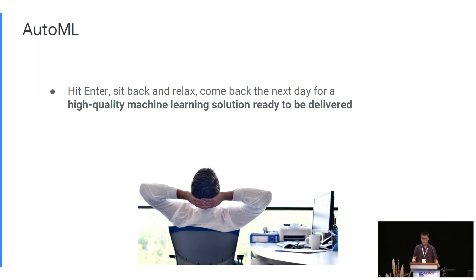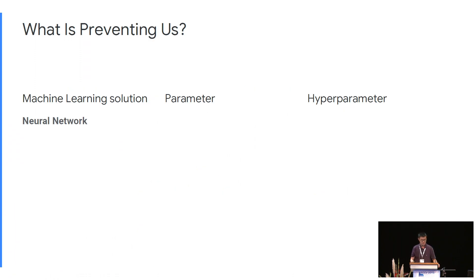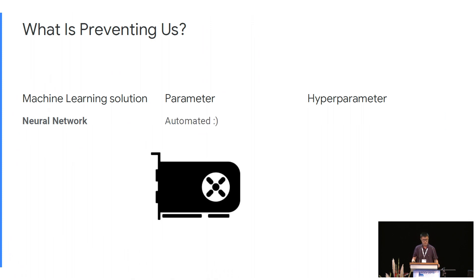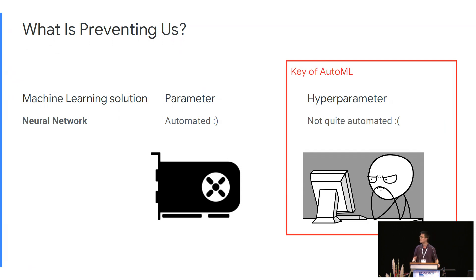Imagine you go to work, you hit the enter key, and then just sit back and relax. You come back the next day for a high-quality, well-optimized machine learning solution that is ready to be delivered and deployed. Sounds lovely, doesn't it? But that's not how your average day looks like, so what is preventing us? A typical machine learning solution consists of both parameters and hyperparameters. The optimization of parameters is already automated — the machine knows exactly how to do this with backpropagation. It is the tuning of hyperparameters that is not quite automated, and it's the main reason we look the way we do sitting in front of our computer. Therefore, the key of AutoML lies in automating the selection of hyperparameters.